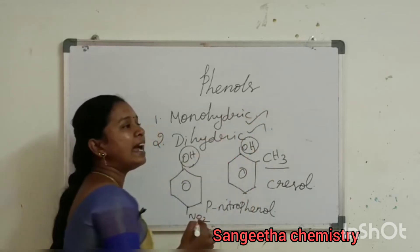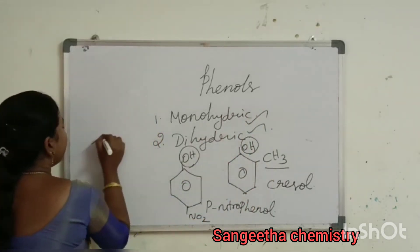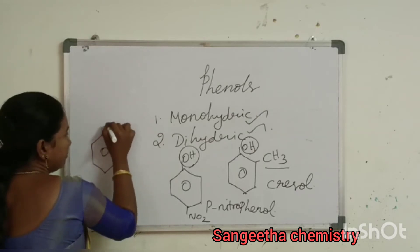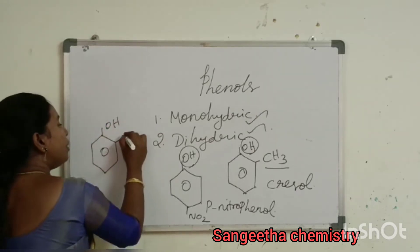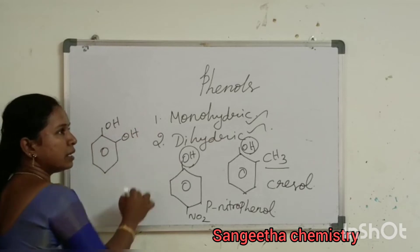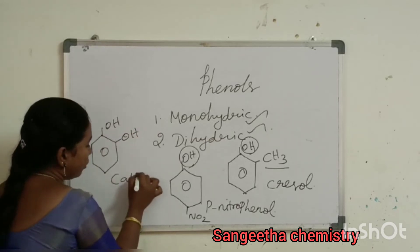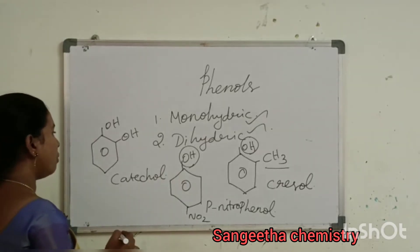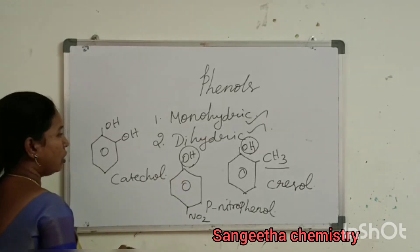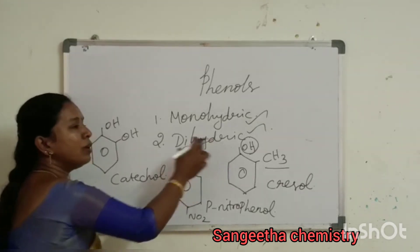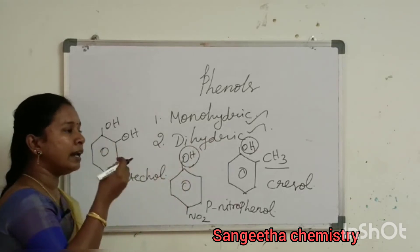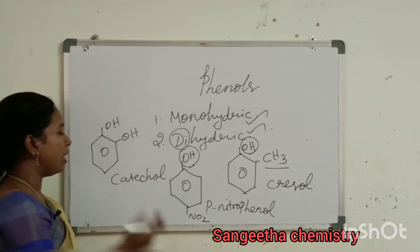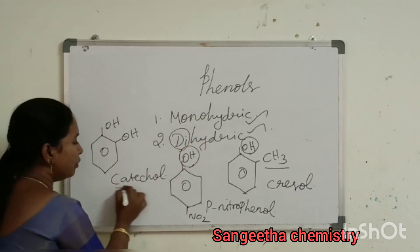Dihydric phenol — there are two OH groups. For example, this compound with two OH groups is called catechol. Based on having two OH groups, that is how we classify it as dihydric phenol.